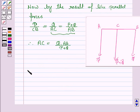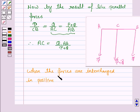Now when the forces are interchanged in position let C dash be the point through which the resultant passes.